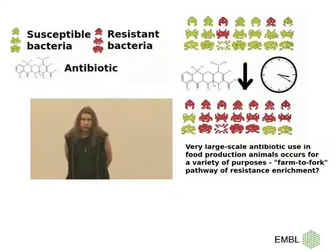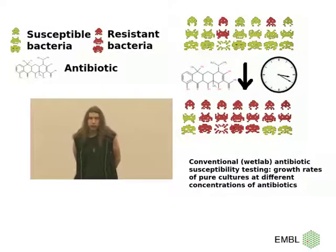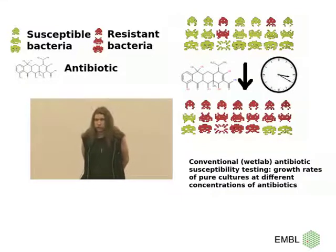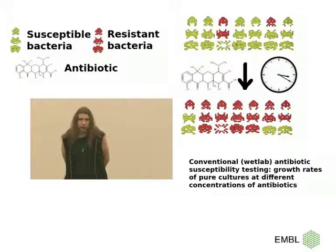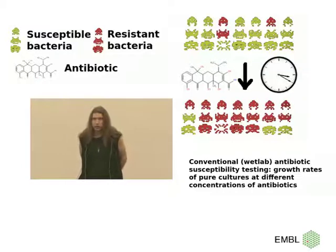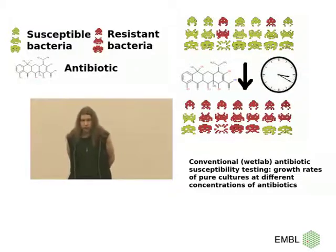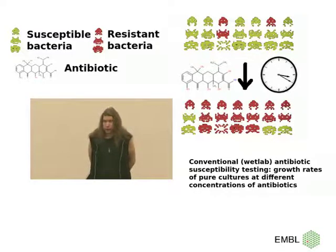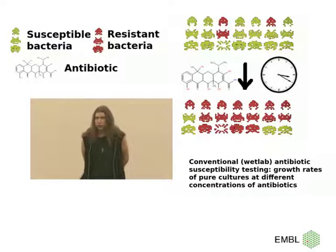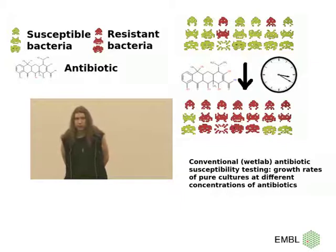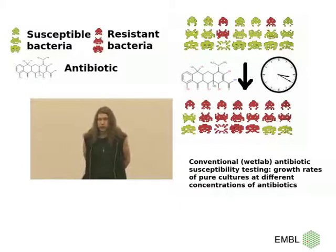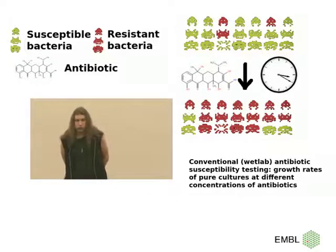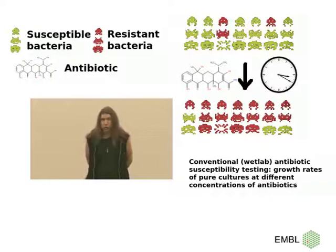However, it's difficult to say for certain, in particular using conventional microbiological methods, since these rely on being able to culture individual bacteria one at a time at different concentrations of antibiotics and see how fast they grow. This is very reliable, but it's expensive and time-consuming, and therefore difficult to scale up to such a level as would allow stringent statistical analysis on what the causes behind this increased carriage of resistance genes are.